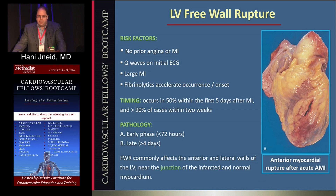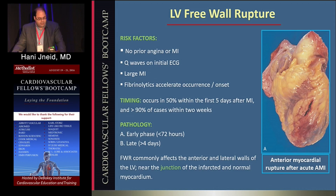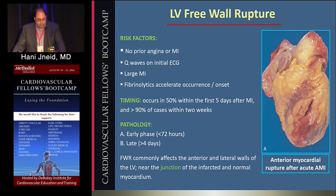Survival is still in the range of about 50% or so. The first complication is LV free wall rupture, which is associated with the highest mortality. Risk factors include no prior angina or MI, transmural MI, large MIs, and thrombolytic therapy use, all of which are associated with free wall rupture.